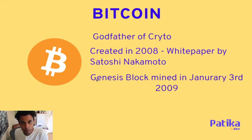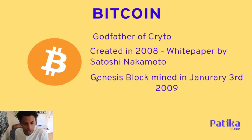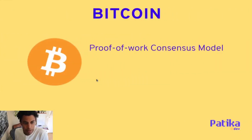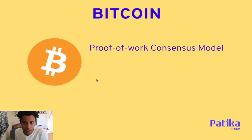After the paper was published, it took some time for it to actually get implemented. The first block of Bitcoin, the Genesis block, was actually mined in 2009. It follows a proof of work consensus model. What proof of work means is that each time a node adds a block to the blockchain, it needs to actually perform some sort of computation — and that's the work in proof of work.